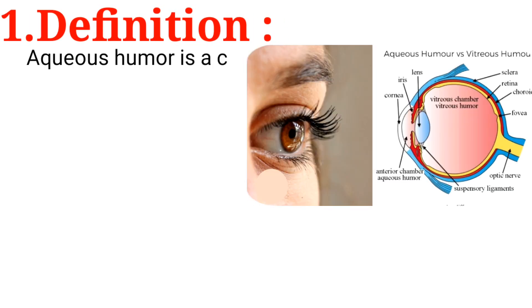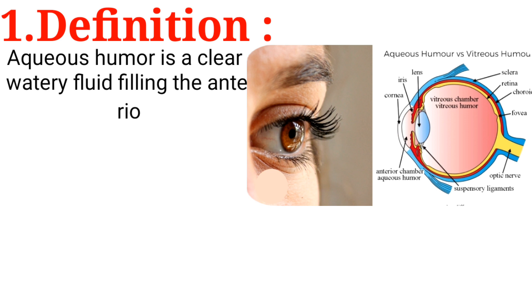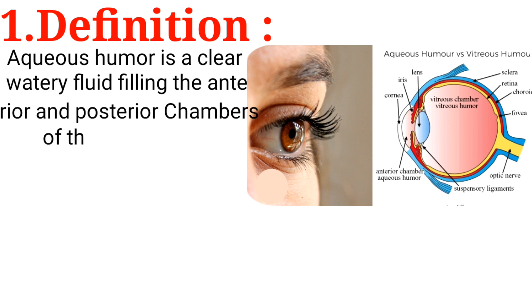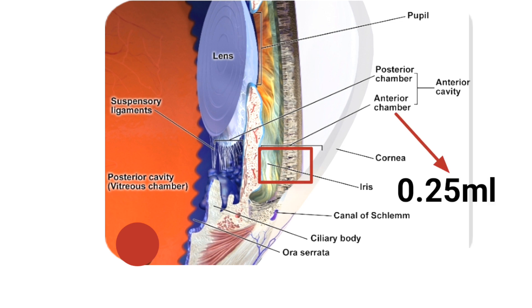Aqueous humor is a clear watery fluid filling the anterior and posterior chamber of the eyeball. Its volume in the anterior chamber is 0.25 ml, while that in the posterior chamber is 0.06 ml.